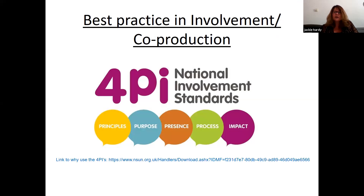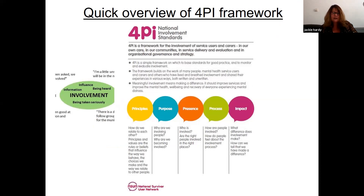The gold standard of involvement is NSUN's 4PI involvement standards, developed with people with lived experience as part of a national involvement partnership. The areas are: Principle, Purpose, Presence, Process, and Impact. To illustrate, when I was working at a national mental health charity, I set up a co-production advisory group around parent disability. This was about making our peer support materials and training more accessible and opening up to a diverse group of people so they could become peer supporters at our organisation.